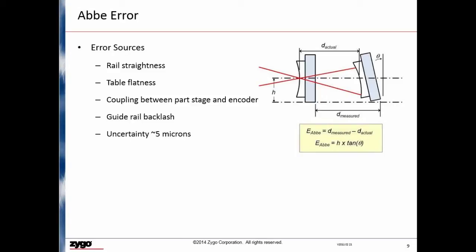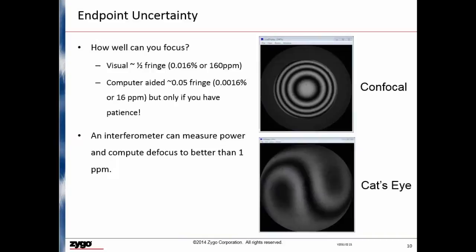So how can this error be eliminated? One way to do that is to measure the translation at the optical axis and not at some offset location. That's obviously not easy to do with a mechanical scale such as this, but we'll look at ways to solve that problem later in the presentation.